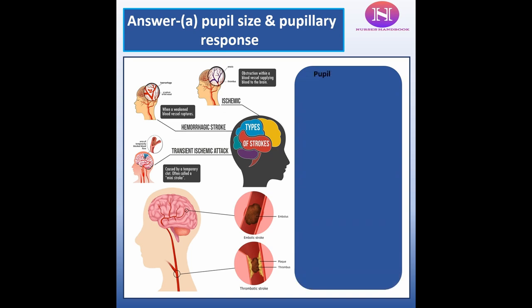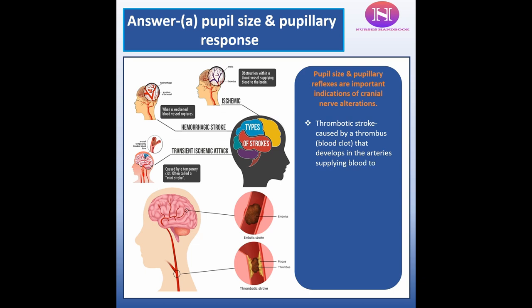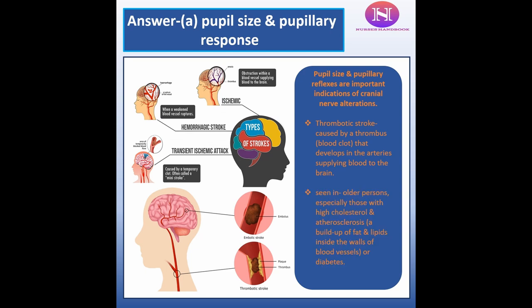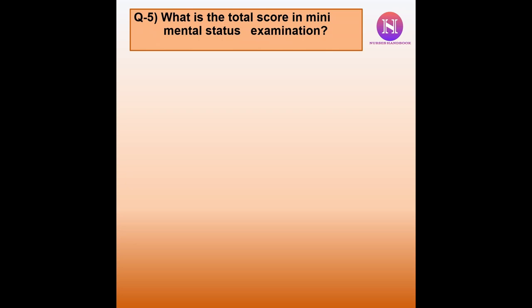A thrombotic stroke is caused by a thrombus — a blood clot — which develops in the arteries and blocks blood supply to the brain. Thrombotic stroke comes under the category of ischemic stroke and is commonly seen in older persons with high cholesterol, atherosclerosis, and patients with diabetes mellitus.